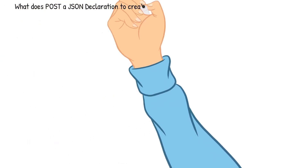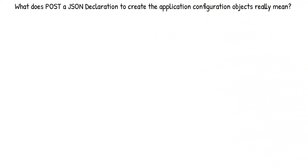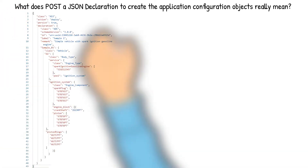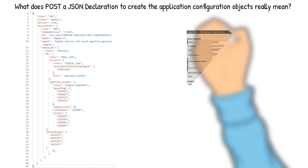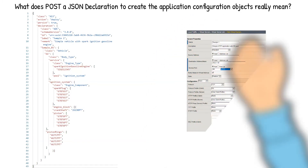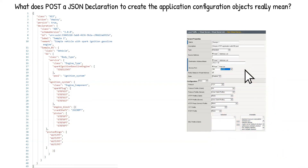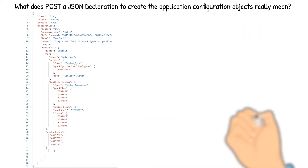What does posting a JSON declaration to create the application configuration objects really mean? A JSON declaration is a specific way to write out the configuration objects in a flat file instead of mouse-and-click in the GUI. It contains JSON objects that are written out for the configuration of the application.